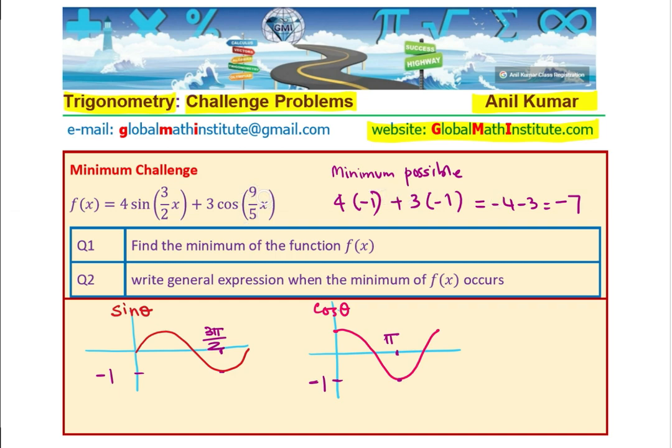So, if both happens together at the same time, then you get this minimum value. Since their periods are different, you see the periods are different, sometime they will match the minimum value. And at that time, this minus 7 is going to be the minimum value. So, the final minimum value could be minus 7.